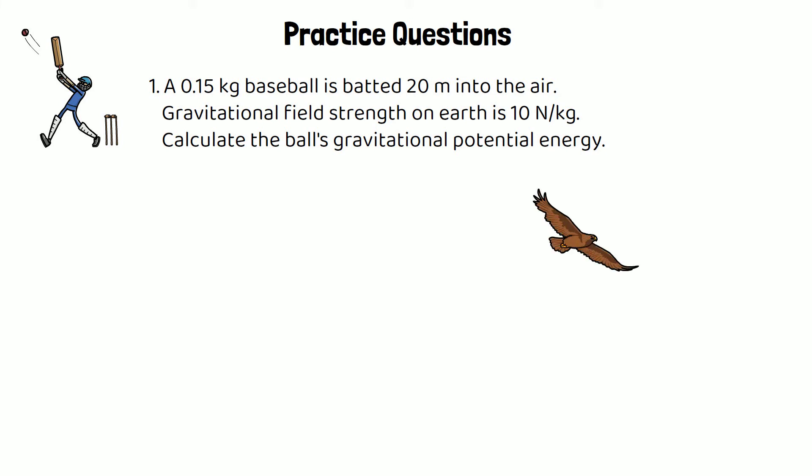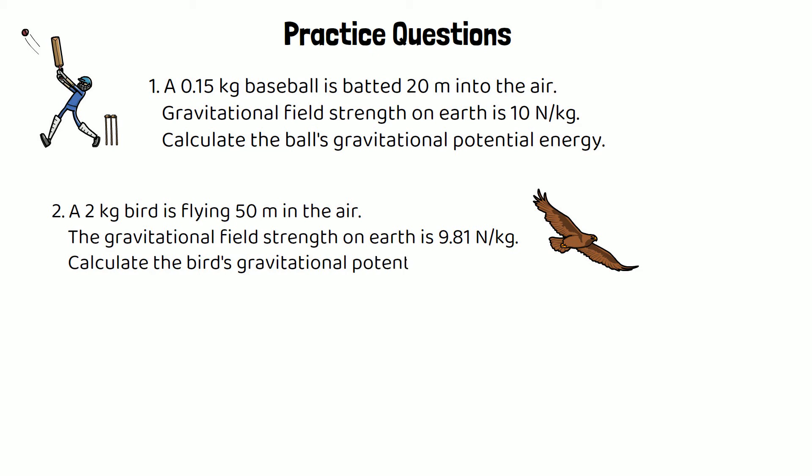Question number two is going to be about a bird. A 2 kilogram bird is flying 50 meters in the air. The gravitational field strength on earth in this one is 9.81. So they've given you a different value. Calculate the bird's gravitational potential energy. Same process, you just need to use the different value for gravitational field strength that they've given you.